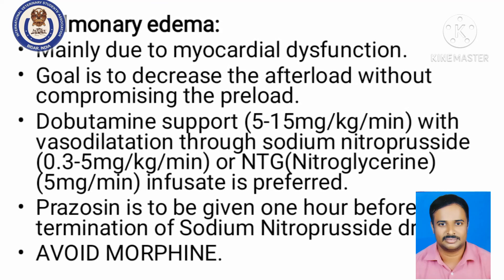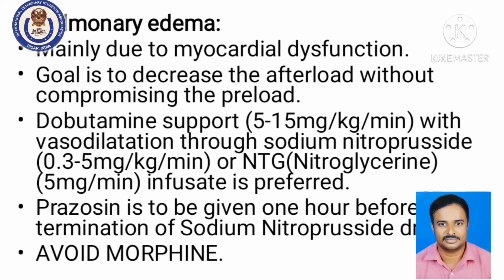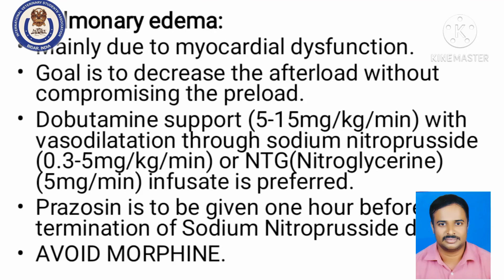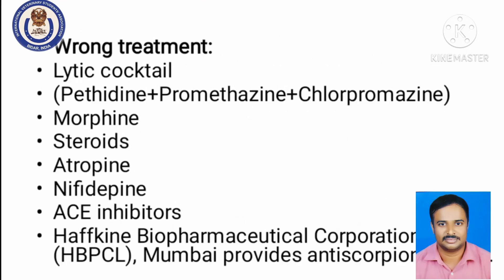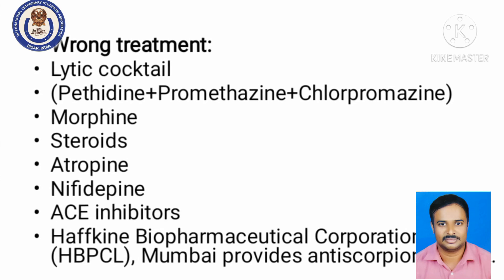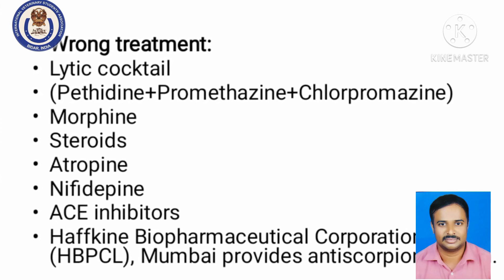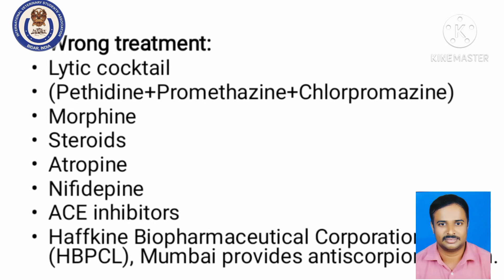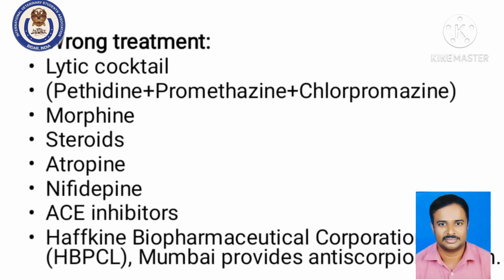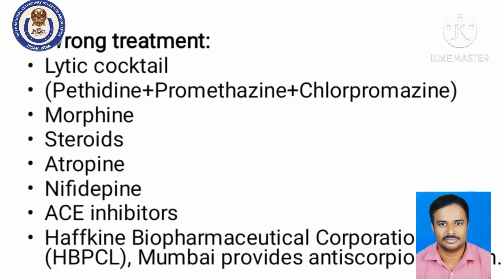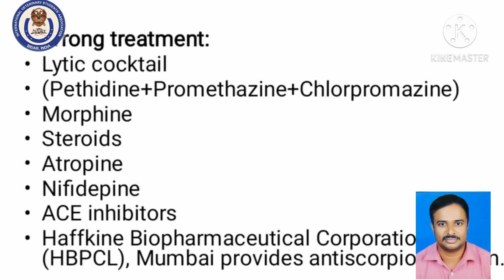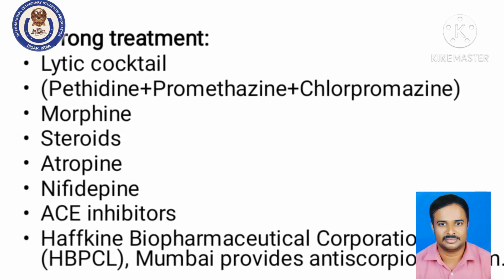Anti-scorpion venom is also available — manufactured by Haffkine Institute, Mumbai. It is called scorpion venom anti-serum, produced from equine globulin, and available as powder for injection. Approximate cost is 350–400 rupees. One ml of anti-serum neutralizes one mg of Buthus venom. For adults, it is administered IV; initially three vials, and the injection can be repeated after 60 minutes.